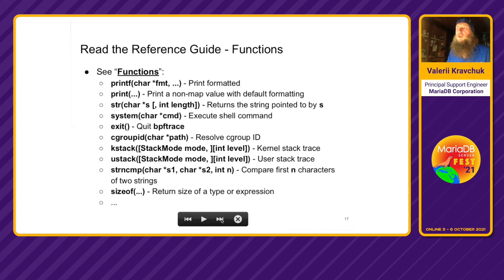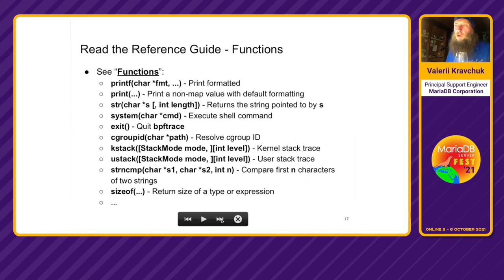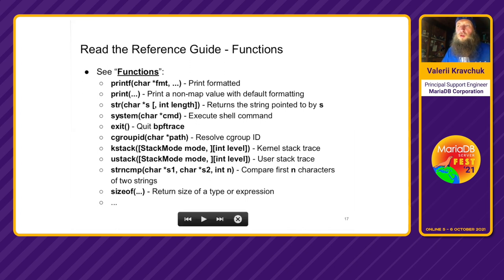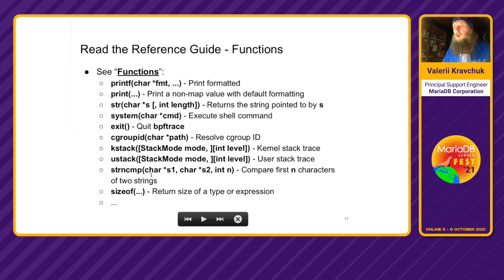There are also predefined variables that return associative arrays themselves — kstack and ustack are aliases for functions. You can deal with command line arguments the same way as in shell, writing parameterized programs. There are predefined functions: printf (C-style), print, str (converting to zero-terminated string), system (executing a system command), exit, stack-getting functions in various formats, sizeof for different structures, string comparison, and many more.